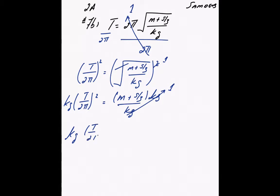kg t over 2 pi squared equals m plus s over 3.